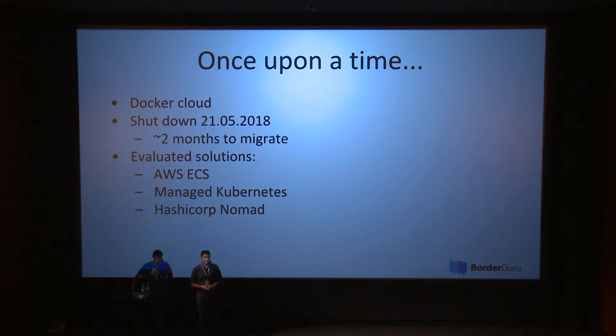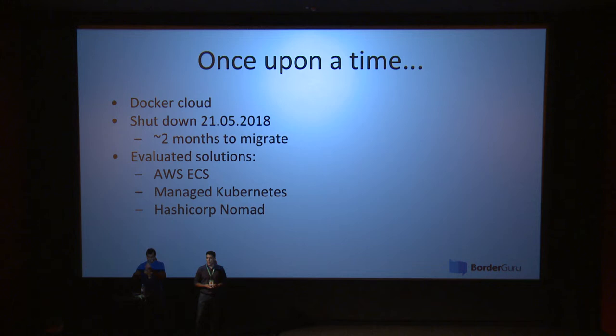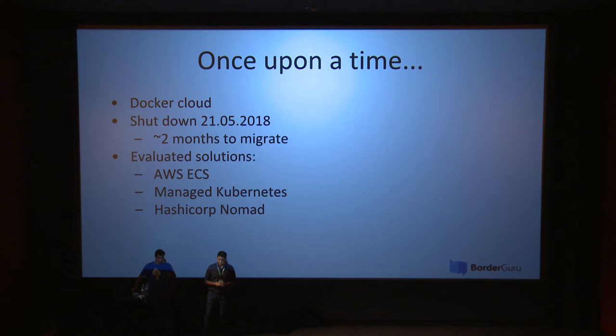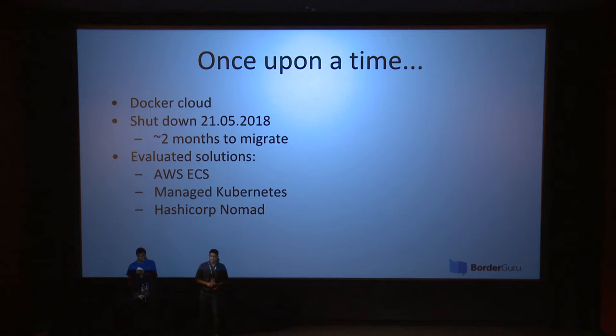We were already using AWS, so ECS came to mind since it manages containers and is managed by AWS. But it wasn't really fitting our requirements. We also checked managed Kubernetes, which could have helped, but most of those services were really expensive and we don't have millions of microservices or that level of requirements. Some of those vendors weren't even replying when we were asking for invoices to see how much it would cost. And then we stumbled upon Nomad.